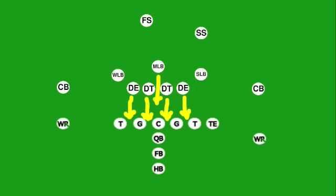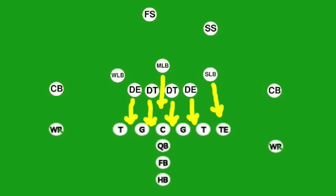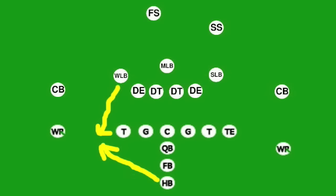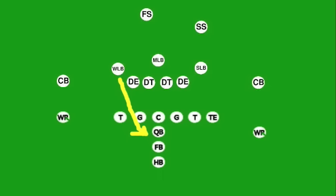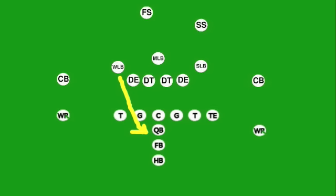In the 4-3, the linemen tend to line up in the gaps between the offensive line. On passing downs, the middle linebacker is often responsible to cover any running backs. The strong side linebacker covers the tight end, and the weak side linebacker either covers an offensive running back carrying the ball or blitzes in an attempt to sack the quarterback. This is where the weak side linebacker runs as fast as he can through the line and tries to tackle the quarterback.